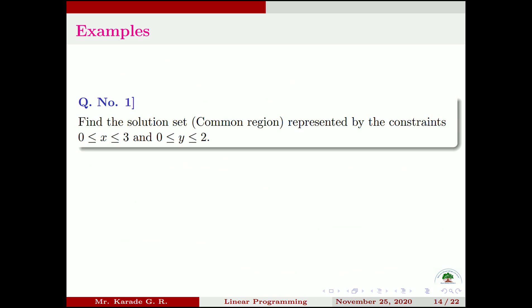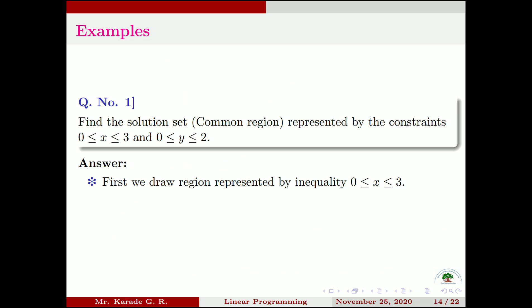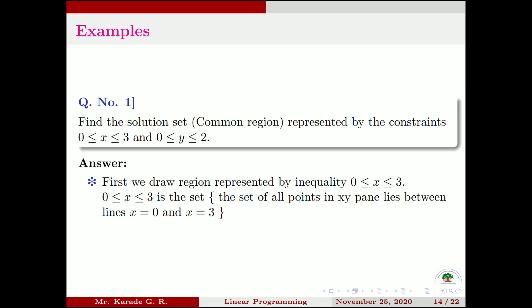Example 1: Find the solution set or common region represented by the constraints x ≥ 0, x ≤ 3, y ≥ 0, and y ≤ 2. We need to find the common region represented by these two inequalities. First, we draw the region represented by x ≥ 0 and x ≤ 3. This is the set of all points in the XY plane which lie between the lines x = 0 and x = 3.